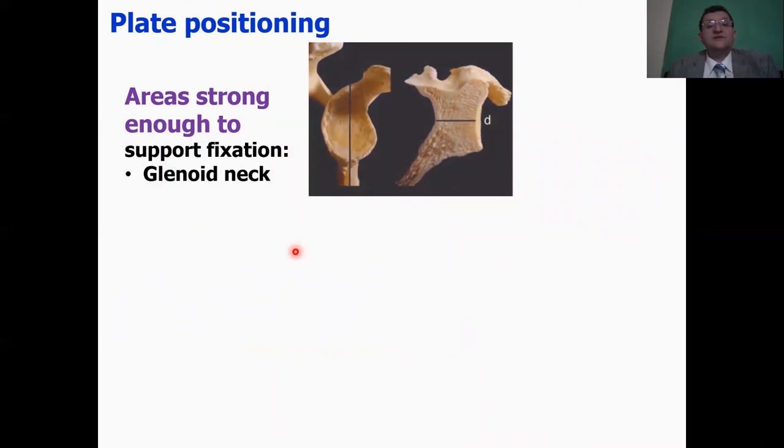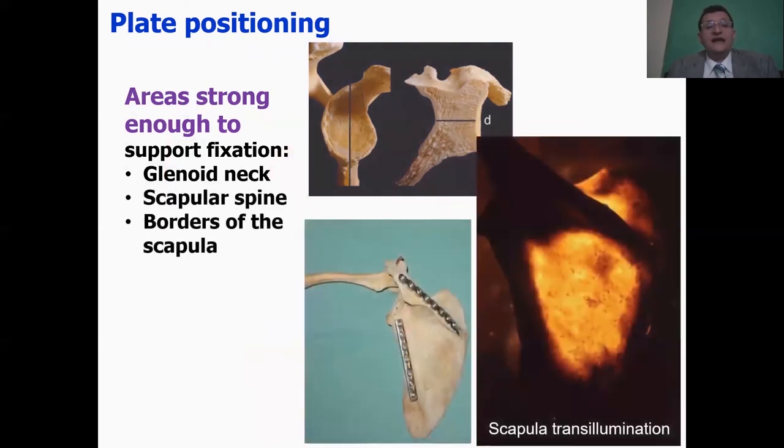Where to put your plate or your internal fixation? You need thick, strong bone. So you should look for the bone around the glenoid neck, the spine of the scapula. You can see that in transillumination or the borders of the scapula, especially the lateral border and less commonly the medial border as well.